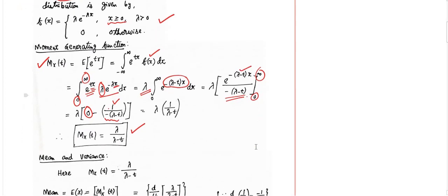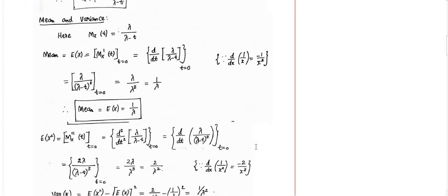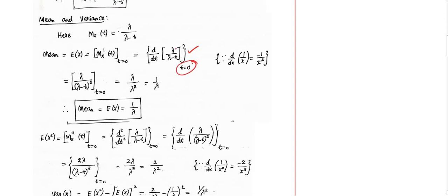Next, we are going to derive the mean and variance. To derive the mean from the moment generating function, differentiate it once and apply t = 0. While differentiating, it looks like differentiation of 1/x. Since the differentiation of 1/x is −1/x², we get −λ/(λ − t)² · (−1), so it becomes λ/(λ − t)². At t = 0, you get λ/λ² = 1/λ. This is the mean.